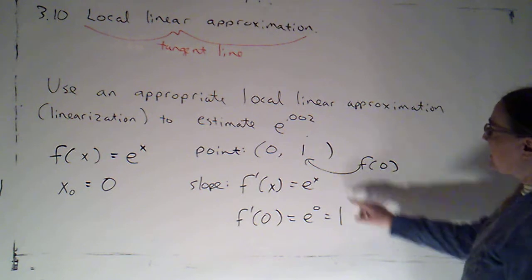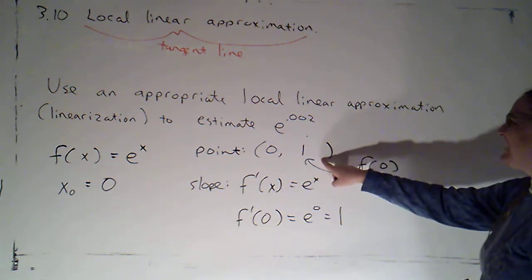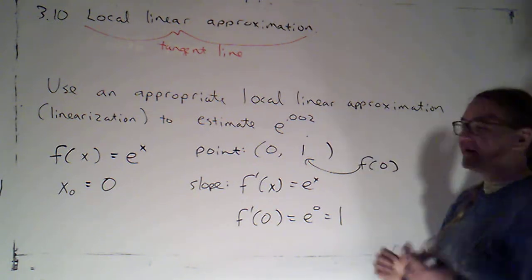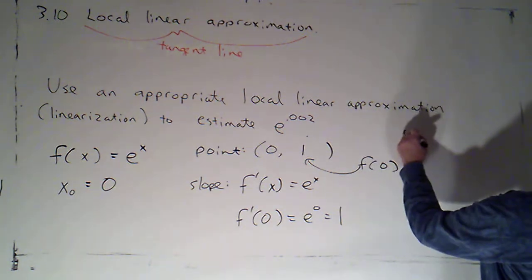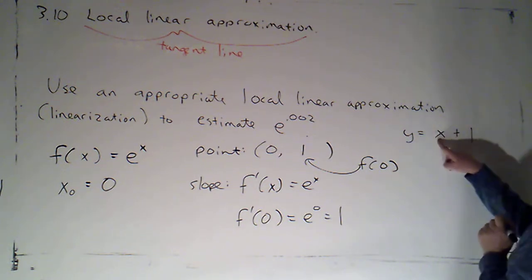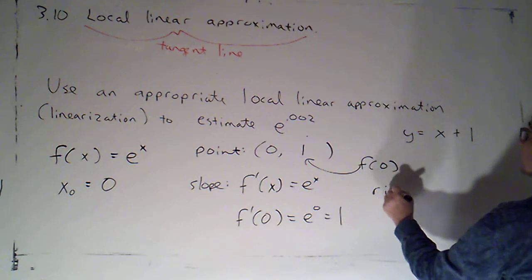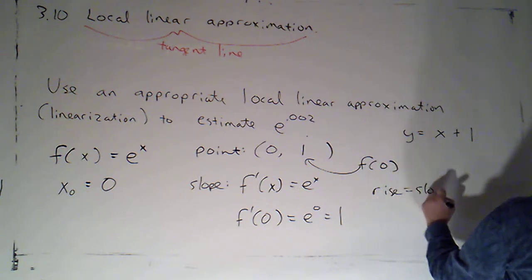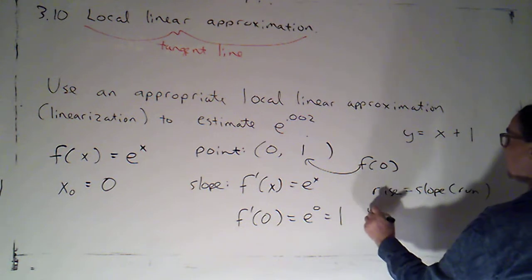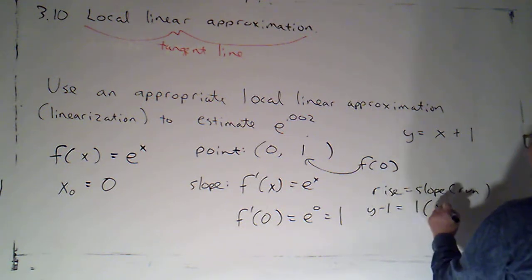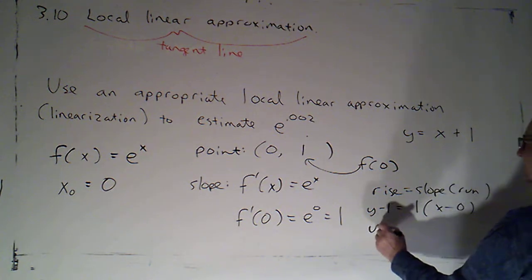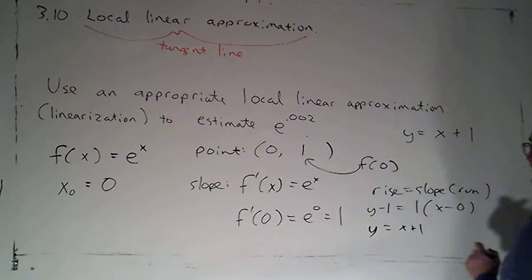Now because my point happens to be the y-intercept, I can if I want to go right to slope-intercept form. So I can say y is one x plus one, slope of one plus one. If I did the usual rise equals slope times run, I'm going to get the same thing. I would get y minus one equals one times x minus zero, and of course if I simplify that, that becomes y equals x plus one.